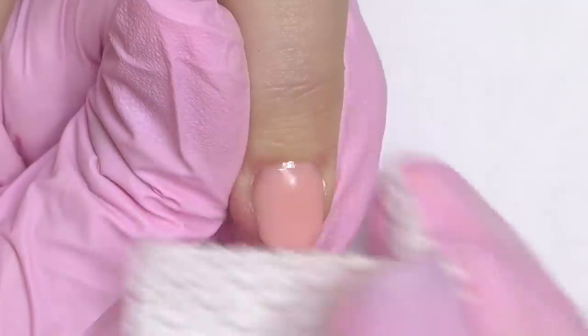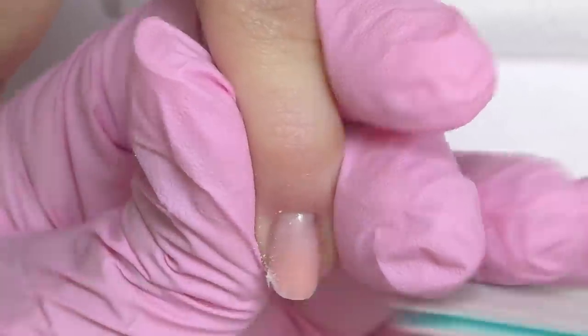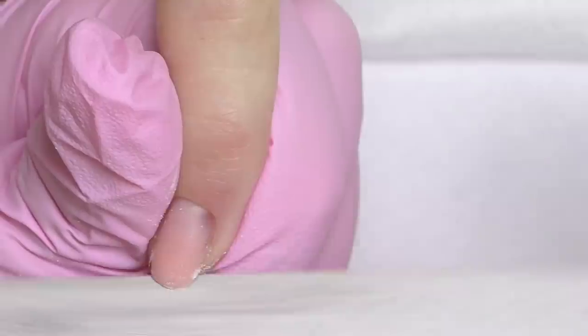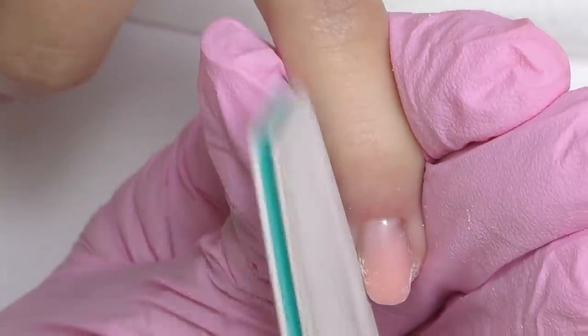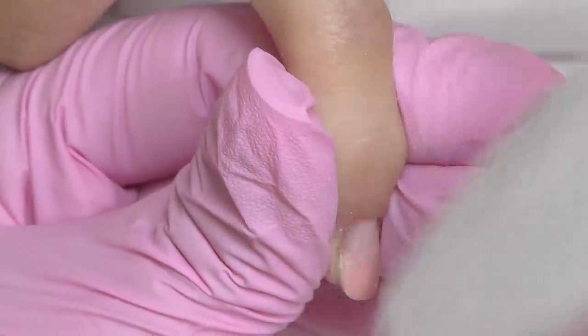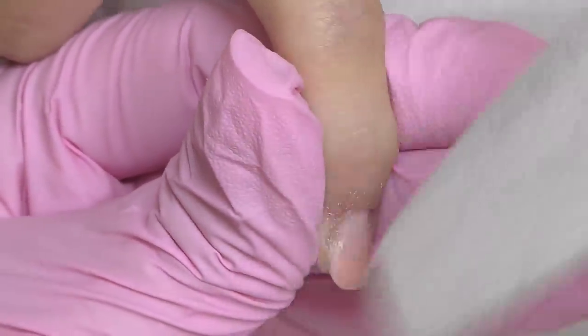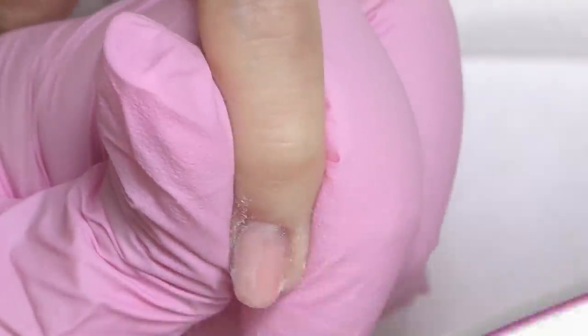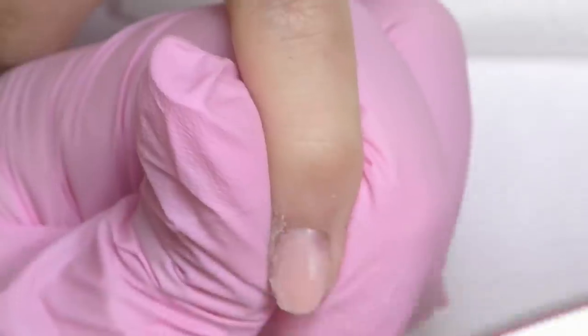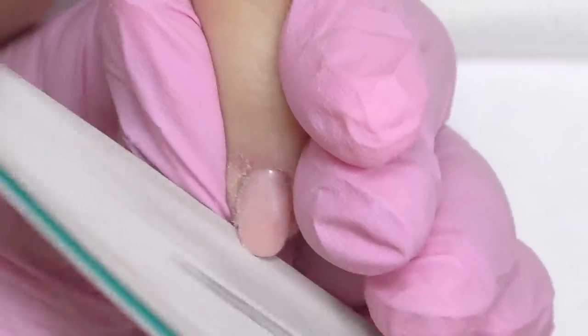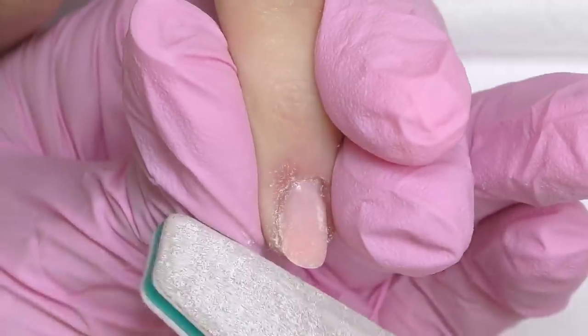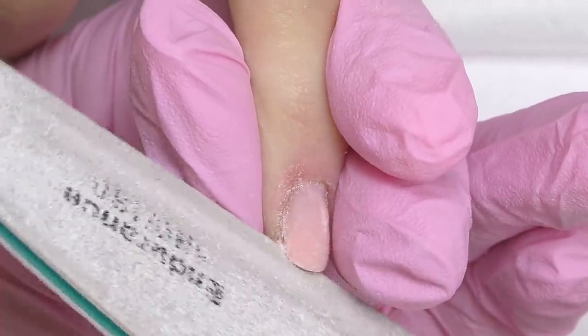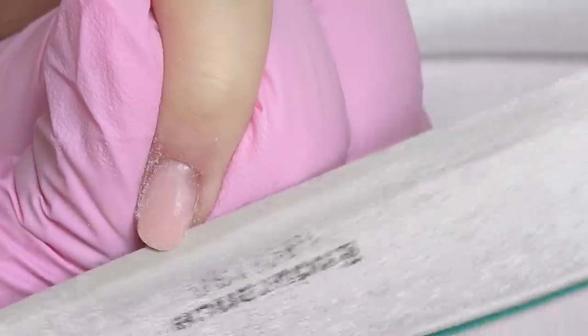The surface is pretty good already so mostly we need to do the shaping itself. Usually the gel files really easy and especially this one NSI so I can simply file it only with 180 file. So I carefully file the sidewalls as well as the shape. When doing oval shape make sure it's symmetrical and always look not only on one nail but on the entire hand.